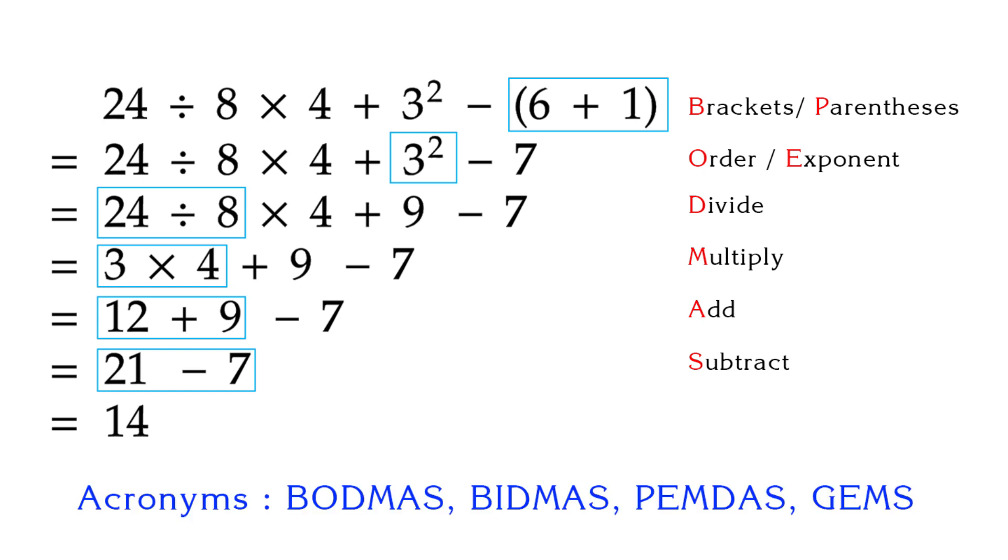There are several acronyms available for this order. The common acronym used for this in several countries is BODMAS and in USA it is called PEMDAS. Between these two acronyms, the order of division and multiplication is reversed, but it doesn't affect the final result since these are inverse operations.